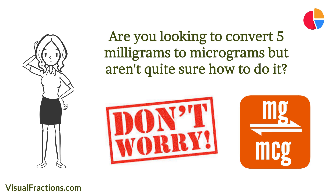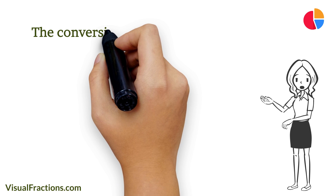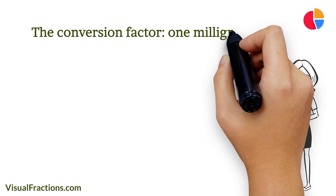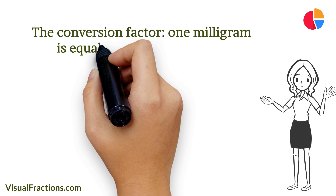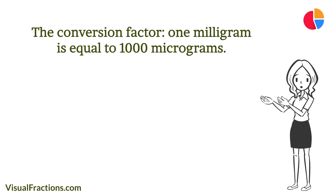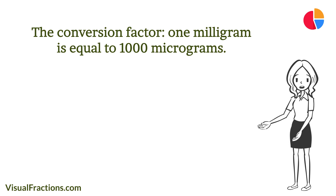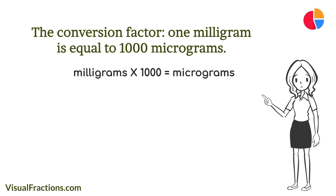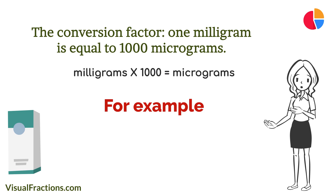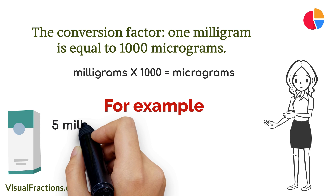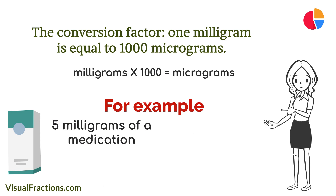In this video, we'll walk you through the process step by step and provide examples to help you master this skill. First, let's review the conversion factor: one milligram is equal to 1000 micrograms. To convert milligrams to micrograms, all you need to do is multiply the number of milligrams by 1000.